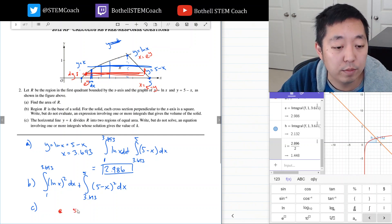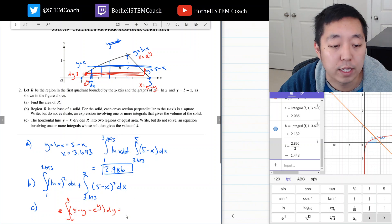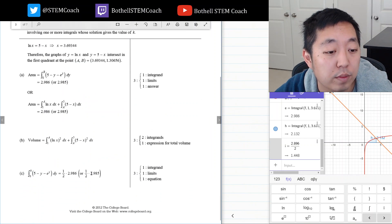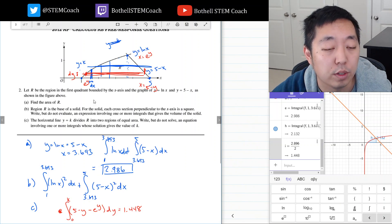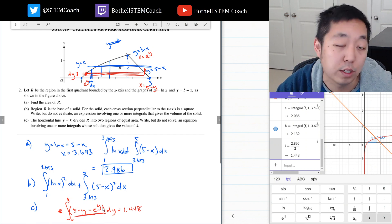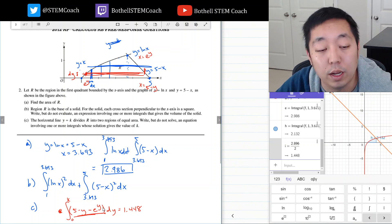That means the area of just that one slice is 5 minus y minus e to the y dy, and then I want to integrate from 0 to k. I want that to be this half, which is 1.448. Let's see if that looks right now that we've done it. 0 to k equals one half of that. Yep, 5 minus y minus e to the y. That's the setup for how you do it in the y direction. You have to convert everything into y because you only know to integrate one variable. So putting everything in terms of y makes sense in this case.